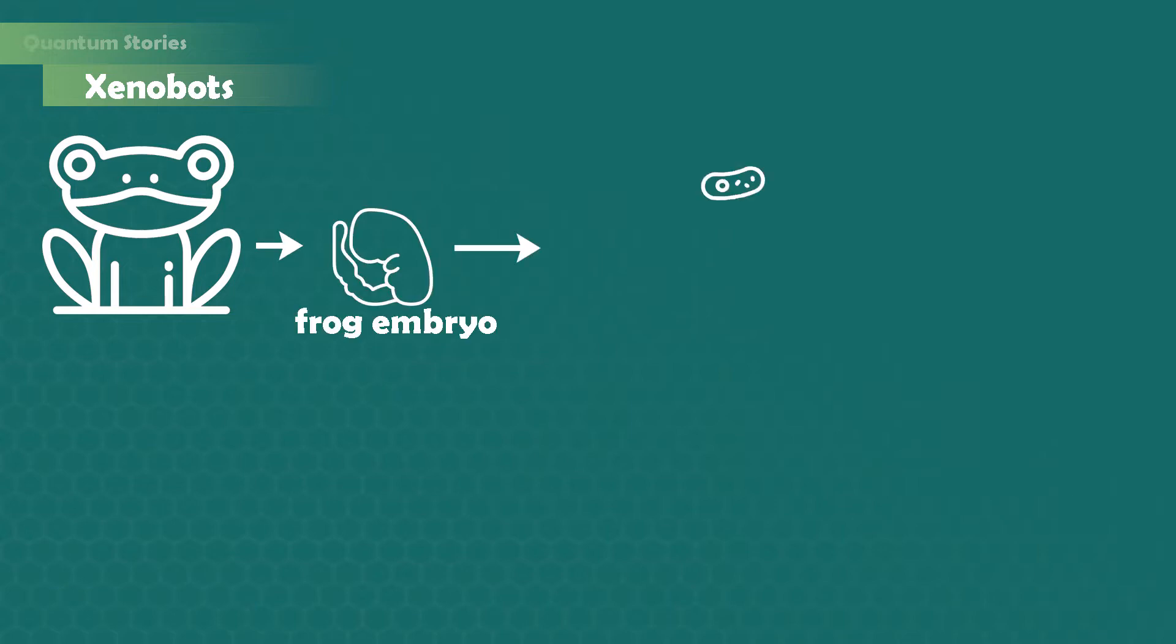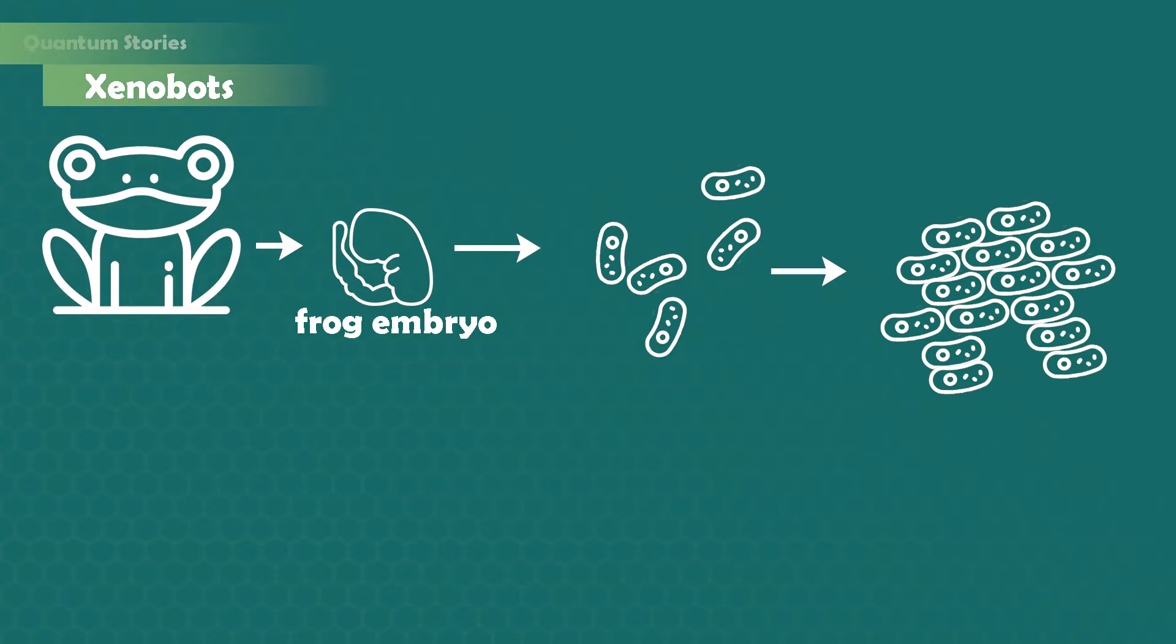Scientists from the University of Vermont and Tufts University created very recently small living robots from frog cells, called tiny xenobots. They started with an embryo from a frog, took a bunch of cells from it and assembled them in a very specific way, to make tiny entities that moved in the desired direction.